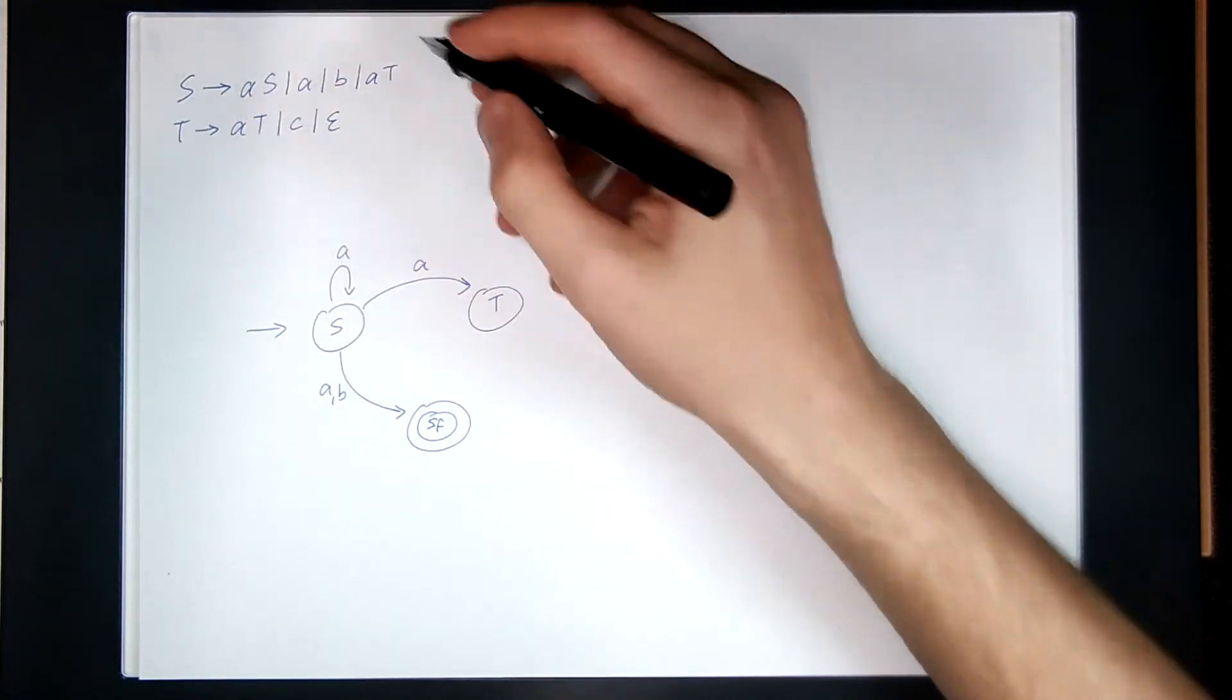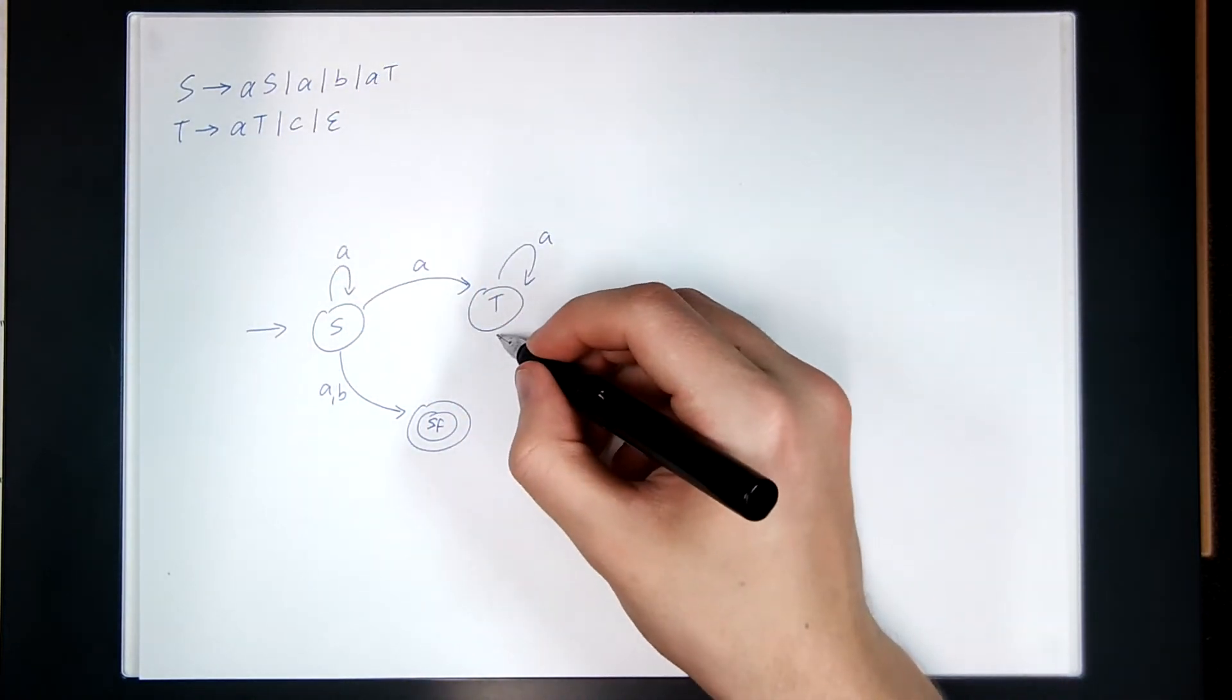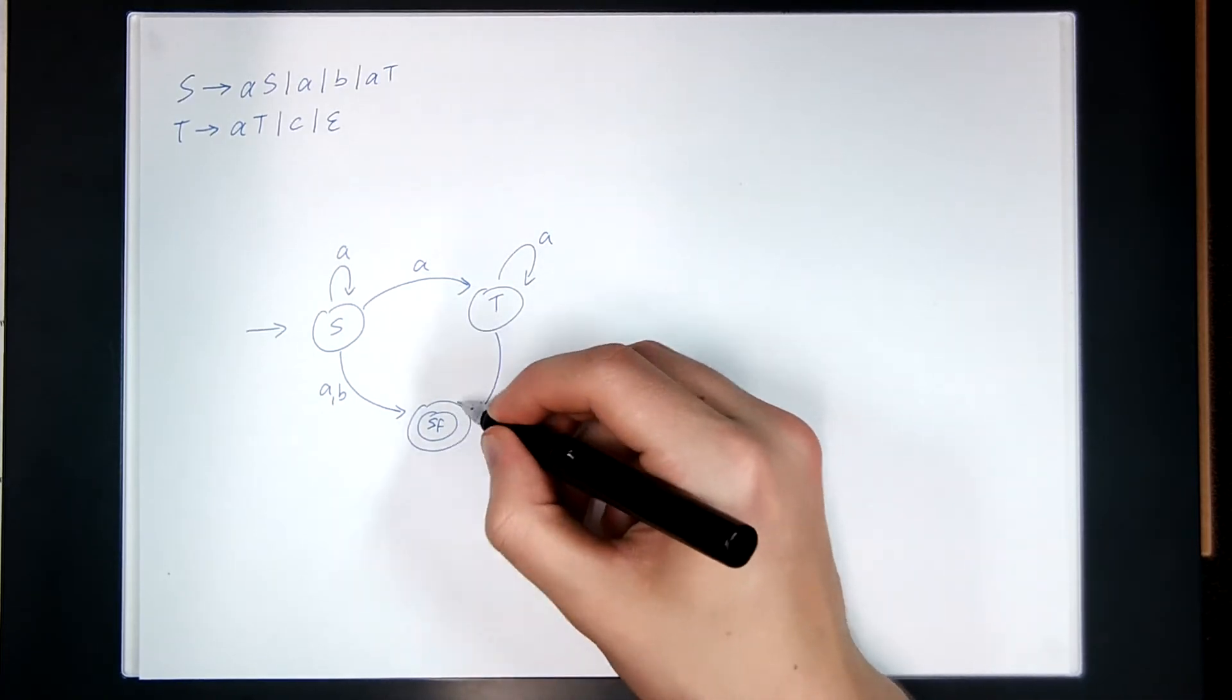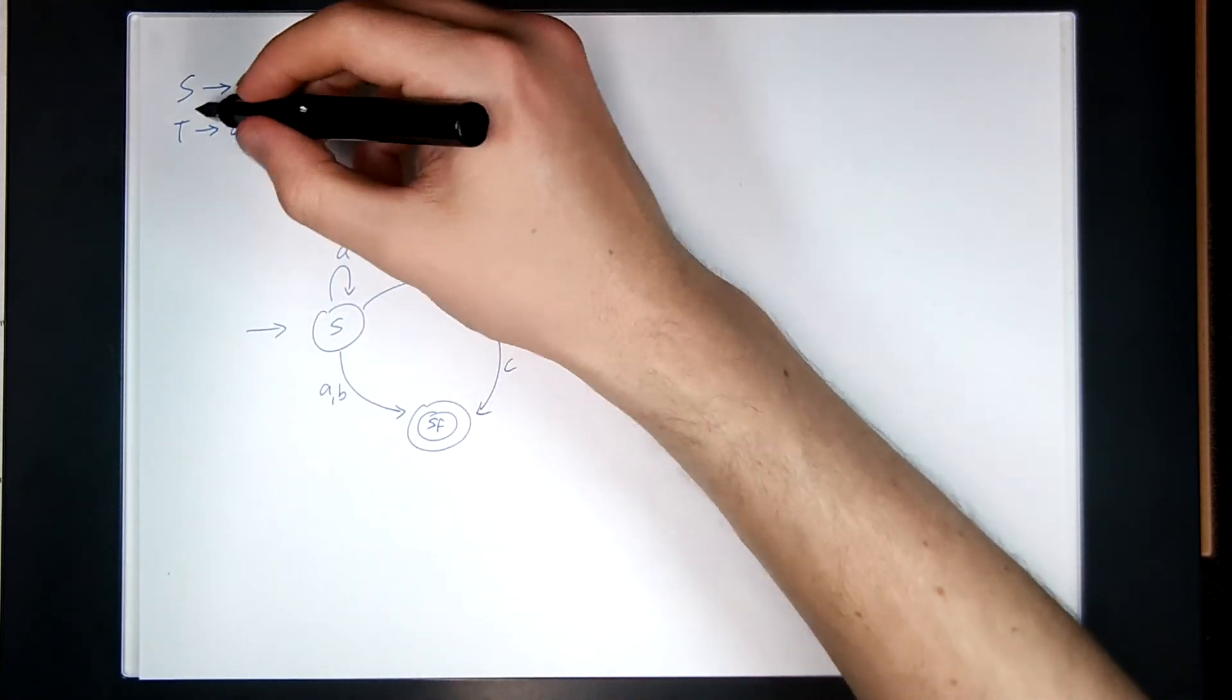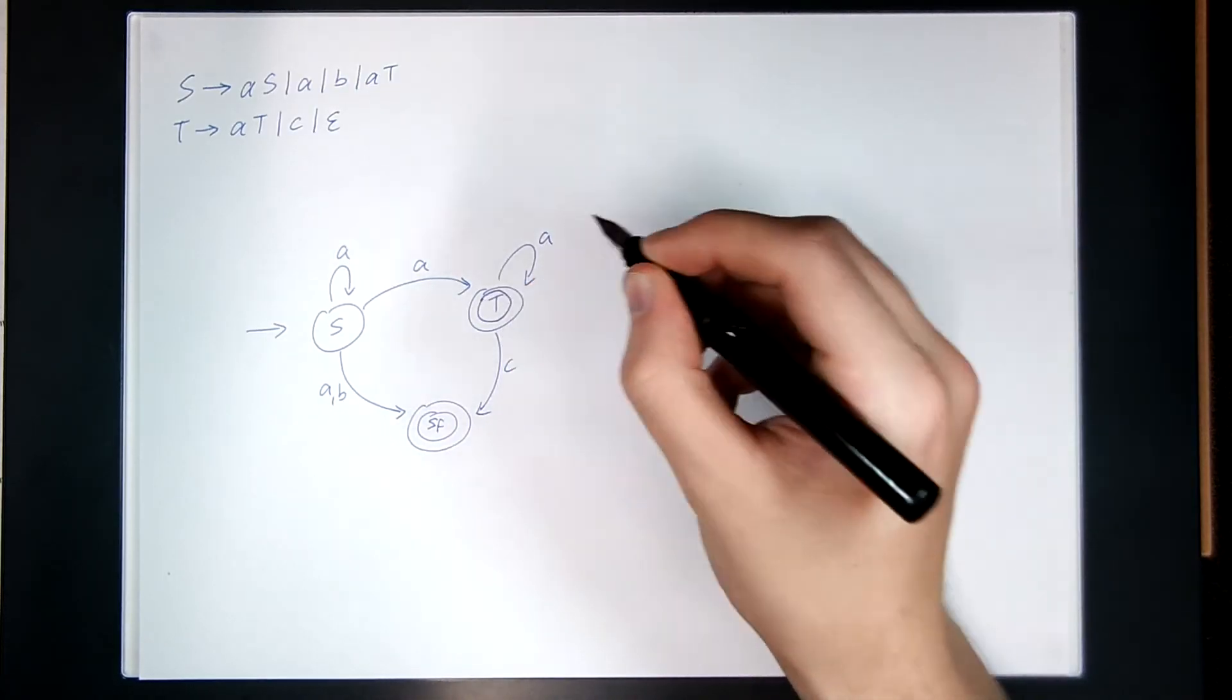T reads an A and goes back to T. T can also read only a C, so that means we have another transition to the magic final state SF. And T can go to epsilon, which means T itself is also a final state. And there we go.